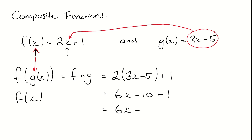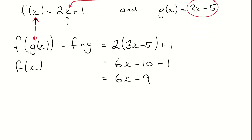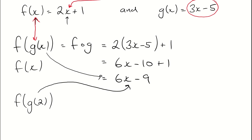That gives 6x minus 9. So if I wanted to work out what f of g of 2 was, I know f of g of x is 6x minus 9. So f of g of 2, I just pop a 2 in for x. I get 6 lots of 2 minus 9, so 12 minus 9, which is 3.